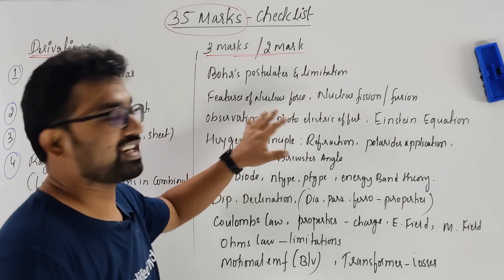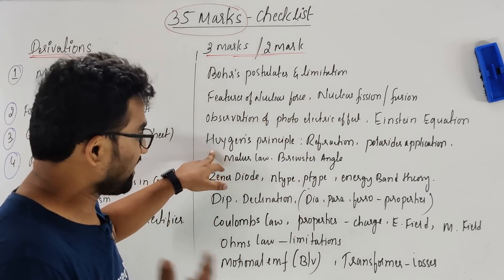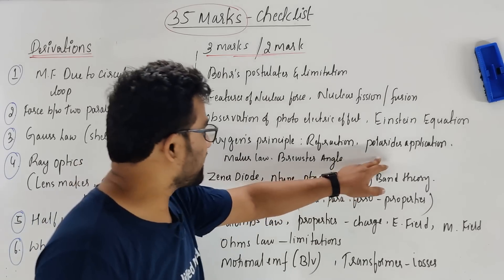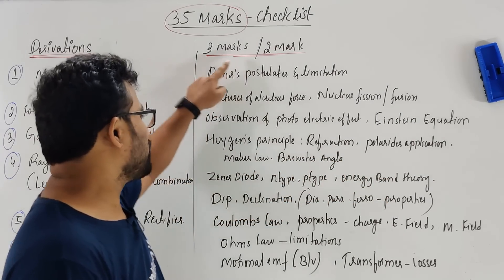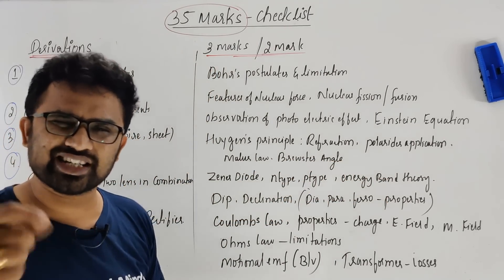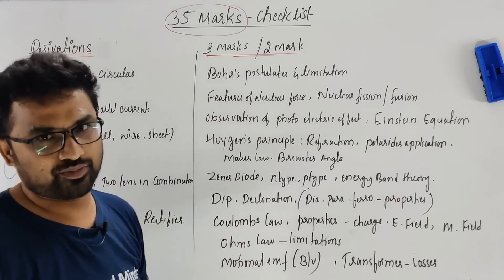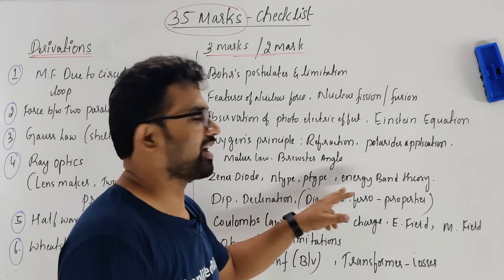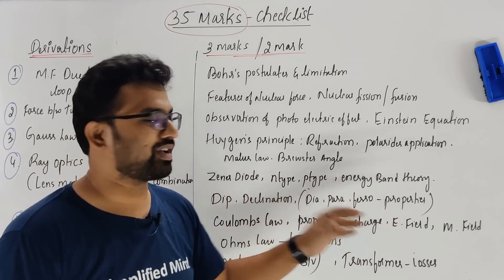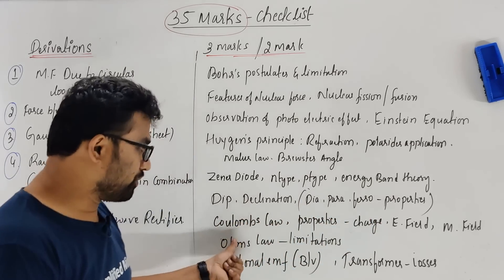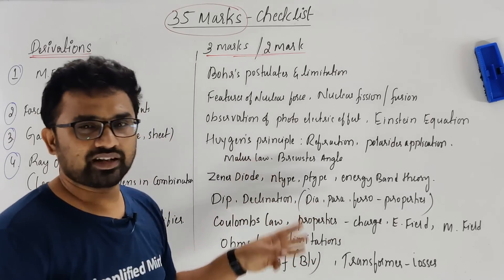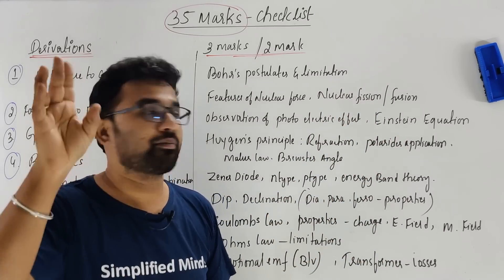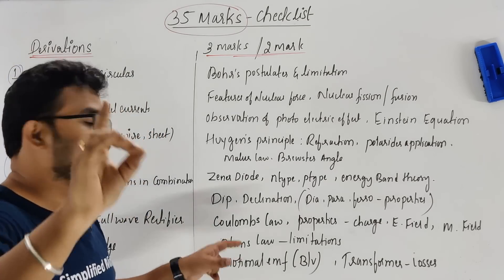I explained Bohr's postulates, limitations, and Einstein's photoelectric equation — Einstein's equation. Now for Huygens' principle, I explained refraction — the standard derivation of the three marker using Huygens' principle. Also polarization, Malus' law, Brewster's law — I already covered those, you can just keep it fast. I'll give all these videos in the description box. Also n-type and p-type semiconductors — three mark questions are possible there. Dip, declination, dia, para, ferro magnetism, Coulomb's law, properties of charge, properties of electric field lines and magnetic field lines.